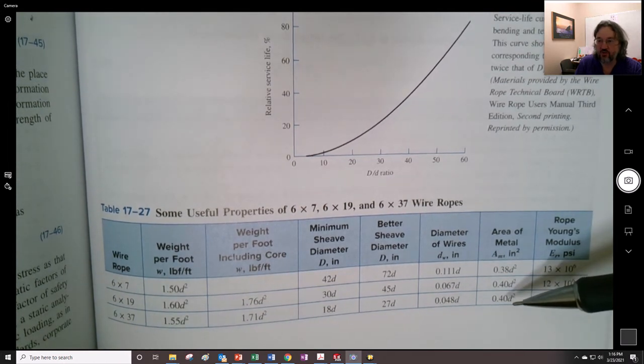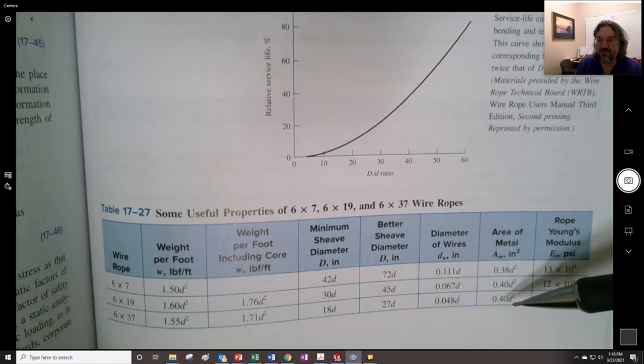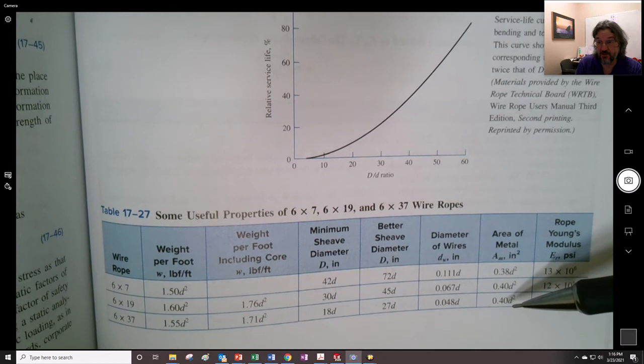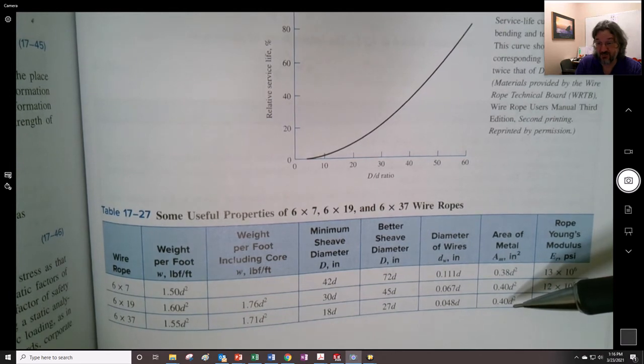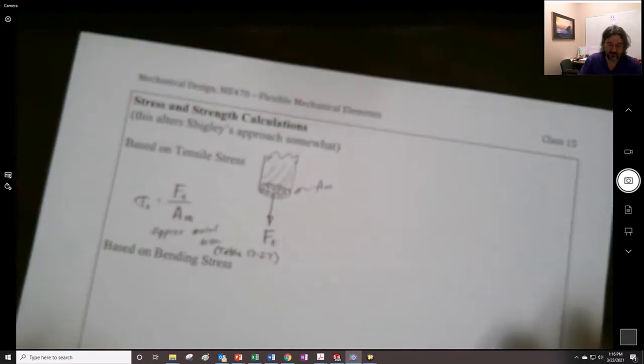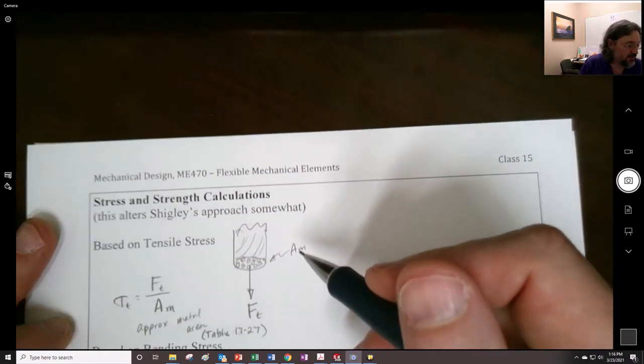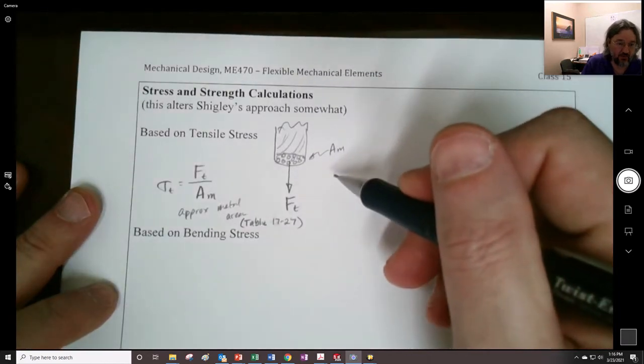Now that D, that's the nominal diameter of the rope. All right, so that's the total rope, right? Sometimes you'll see DW, that's the wire, individual wire diameter. You'll see capital D, that's going to be the sheave diameter. But the little d is going to be the rope diameter, right? So it's some value times that diameter squared is what we find for AM.